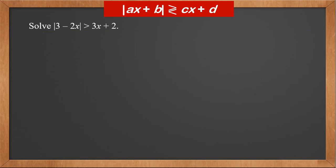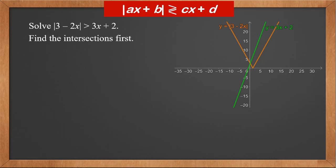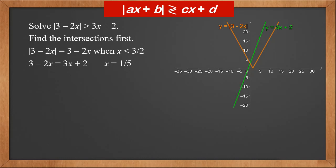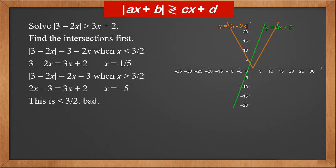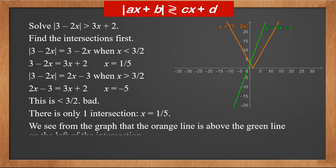Solve the modulus of 3 minus 2X is greater than 3X plus 2. We sketch the graphs and find the intersections first. The modulus of 3 minus 2X equals 3 minus 2X when X is less than 3 over 2, so 3 minus 2X equals 3X plus 2, giving the first intersection X equals a fifth. When X is greater than 3 over 2, it equals 2X minus 3, so 2X minus 3 equals 3X plus 2 gives X equals minus 5. But this is less than 3 over 2, so it's not a valid solution. Therefore, there's only one intersection at one fifth. From the graph, the orange line is above the green line on the left of the intersection, so the answer is X less than a fifth.